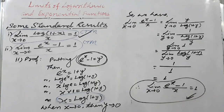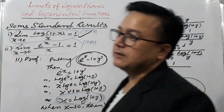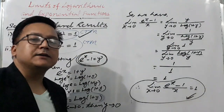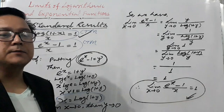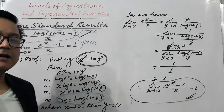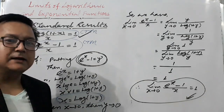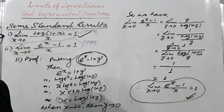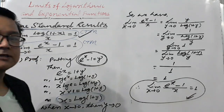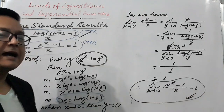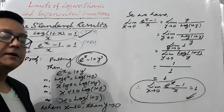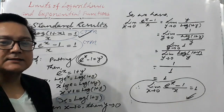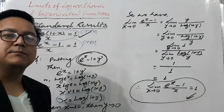Therefore, the limit of (e^x - 1) / x as x tends to 0 is equal to 1. Hence the proof. This is how we prove these two standard results, which are very important for finding limits of logarithmic and exponential functions. If you have any problem, write in the comment box and I'll give answers to your questions. Ask more and more questions and you will get more and more mathematics. Thank you for watching, bye-bye.